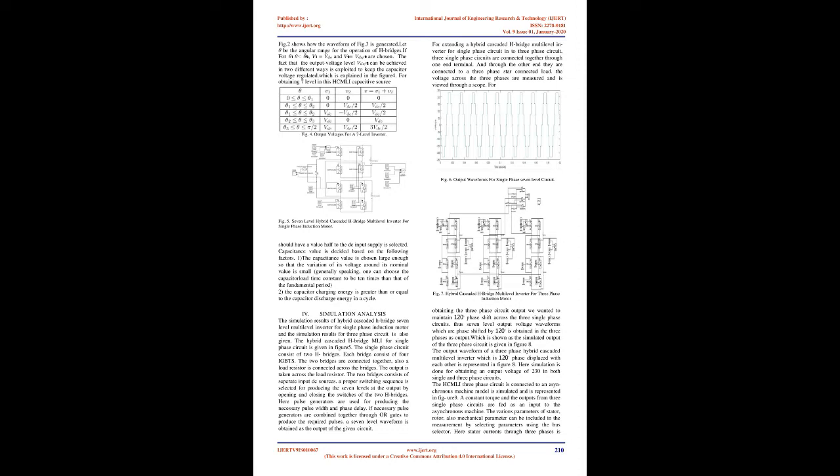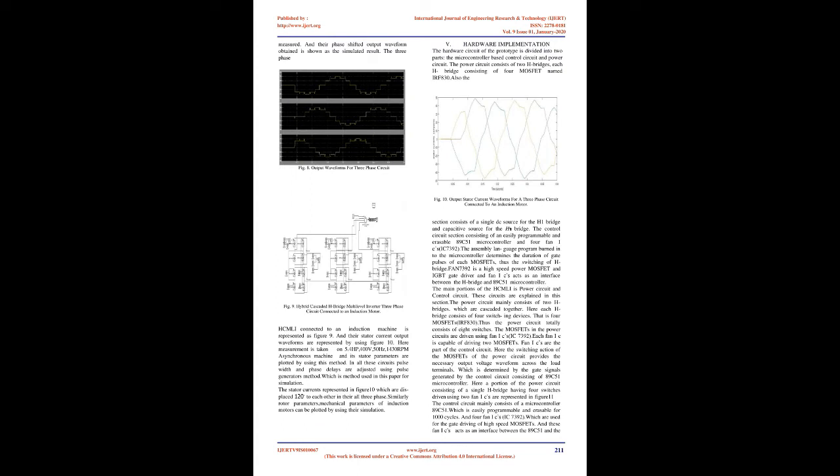This switching scheme uses a possible cycle to output voltage levels of VDC+VC, VDC, VDC−VC, 0, −(VDC−VC), −VDC, and −(VDC+VC). The DC source charges the capacitor simultaneously when producing VDC−VC and −(VDC−VC), which is called a charging cycle.